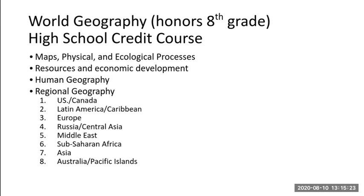Economic development impacts human and regional history. The human geography aspect of World Geography looks at the interactions between man and the environment with respect to culture, religion, food, and politics — all of those various aspects. We study those in a worldwide setting, and then we take the information and study it regionally, starting with the United States and Canada, and working through eight different regions that end with Australia and the Pacific Islands.